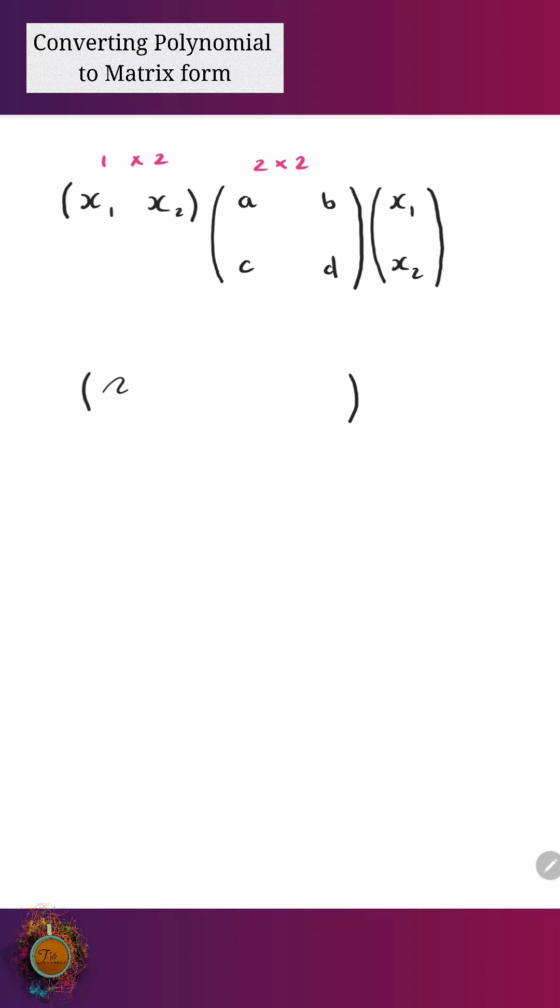So firstly, we've got x1 times a. So we can call that ax1 plus cx2. Like so. So this, this, this, and this add them together. The second element is where we have the same row, but now we're multiplied by the second column. So we have bx1 plus dx2. So this is our 1 by 2 result.